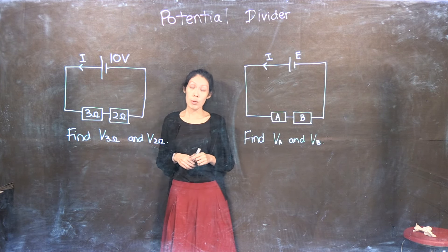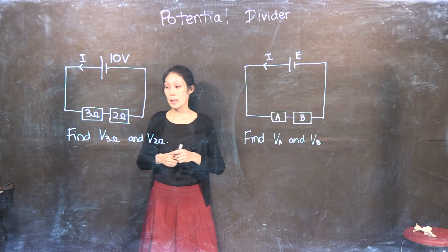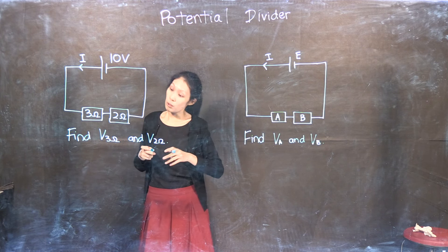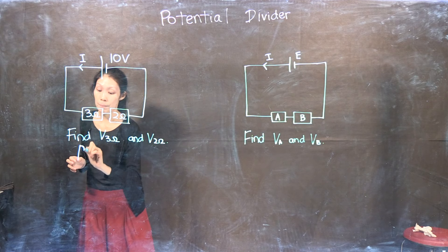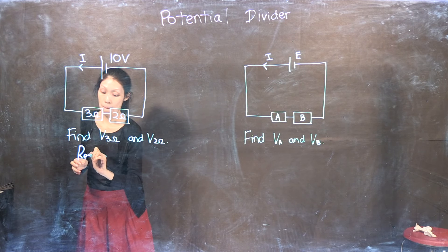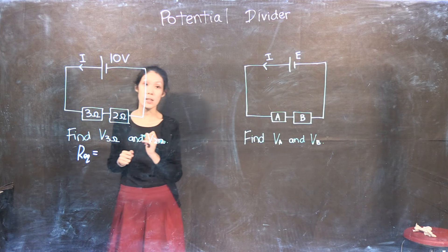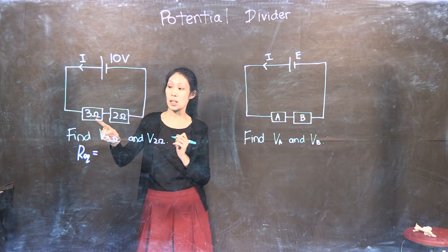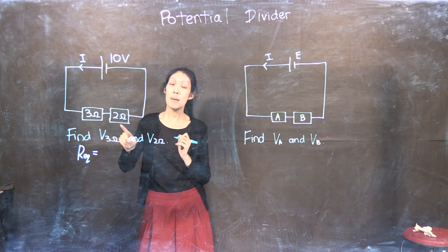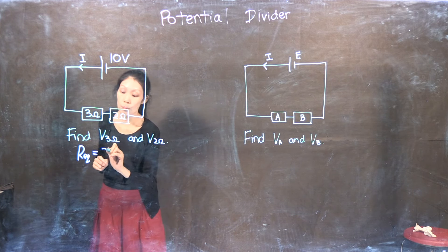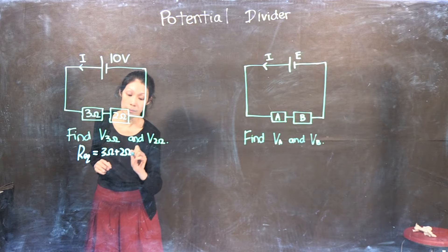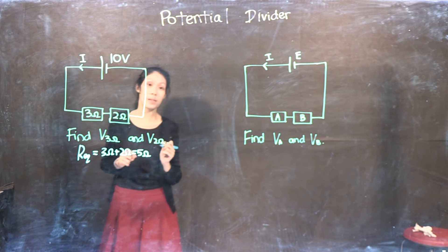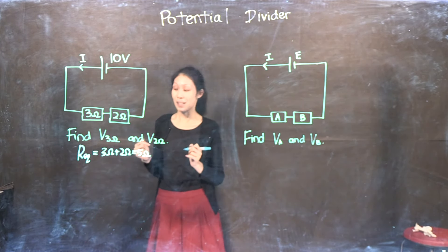Now what would you do usually? First, we would usually find the resistance of the circuit. The equivalent resistance of the circuit is actually the sum of the two resistances — three ohms and two ohms — because we notice that these two resistances are connected in series.